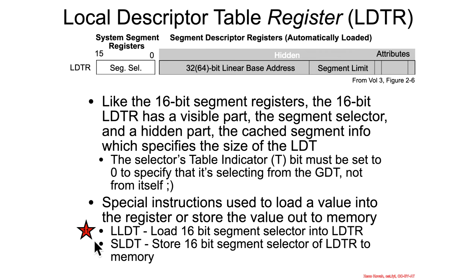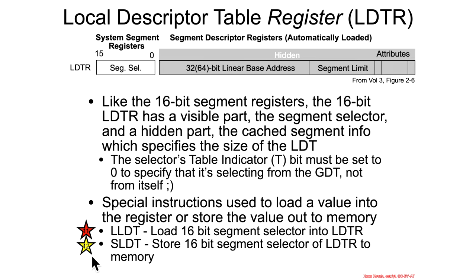So just like the GDTR, there are special assembly instructions to read and write. LLDT is load a 16-bit segment selector — you can only load up the visible portion of the register. And then SLDT is something that's not privileged, and which will take the 16-bit value and store it out to memory if someone wants to read it.